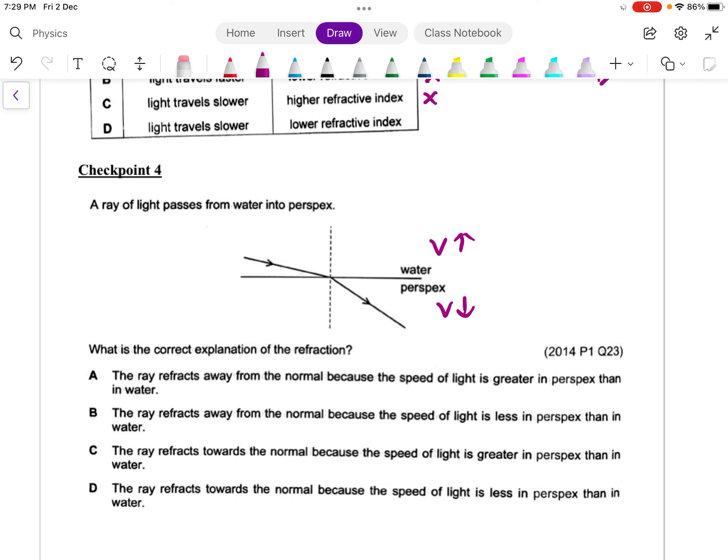Let's talk about the refractive index. Since the speed of light in water is greater, the refractive index should be smaller. So perspex should be higher. So let's take a look at all the different options.